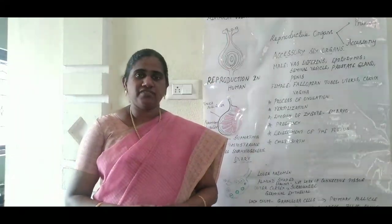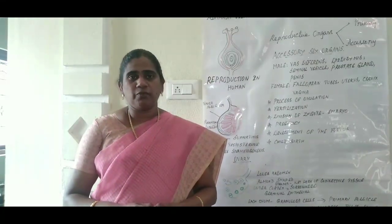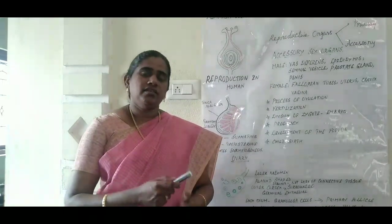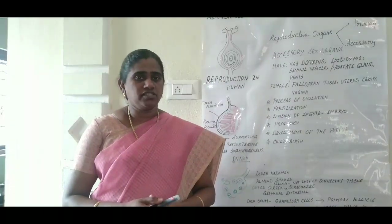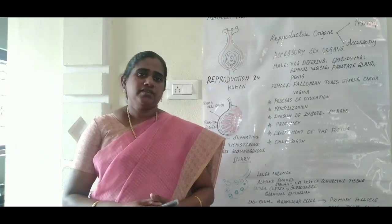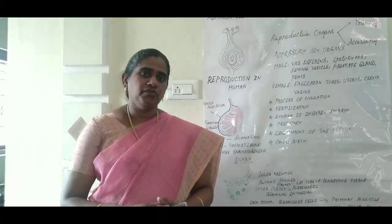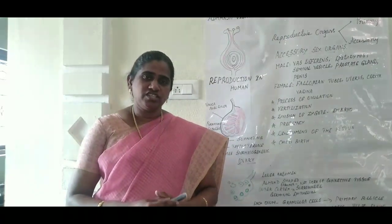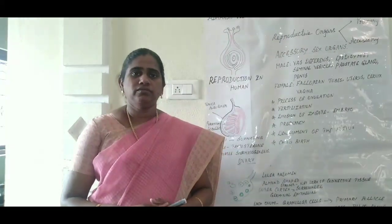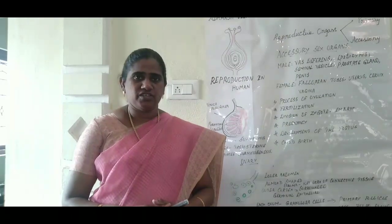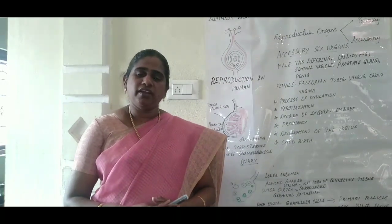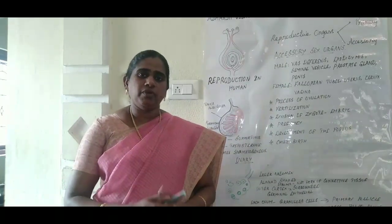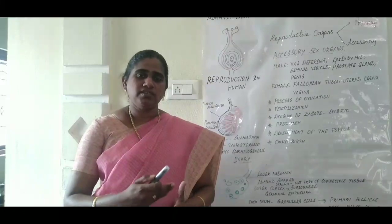Children, in the last session we studied about sexual reproduction in flowering plants. In that we learned about the structure of a typical flower, structure of pollen grain, structure of ovule and the process of its formation. In this session we are going to study about the process of fertilization. Before entering into the topic, let's see a quick recap of the last part.